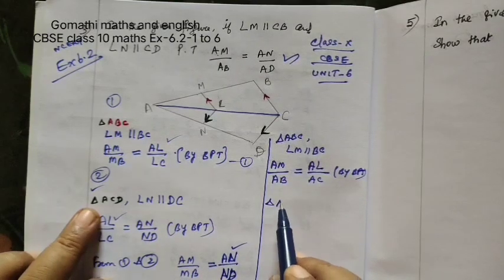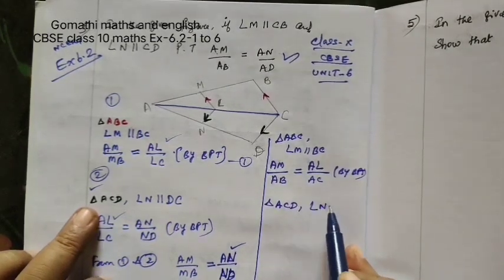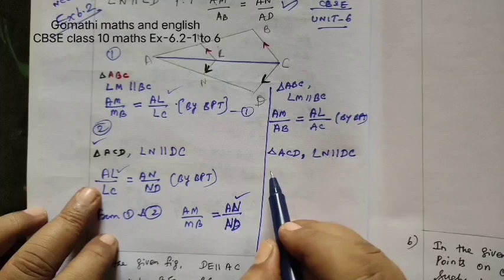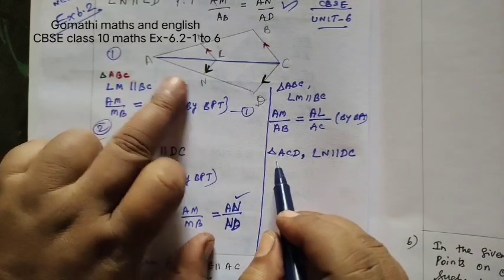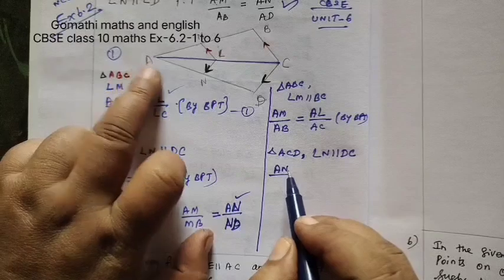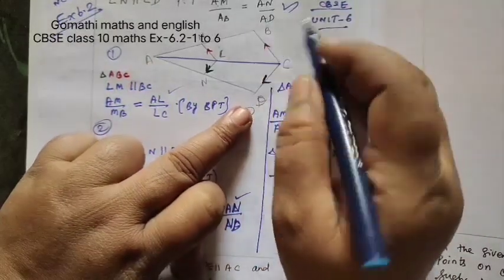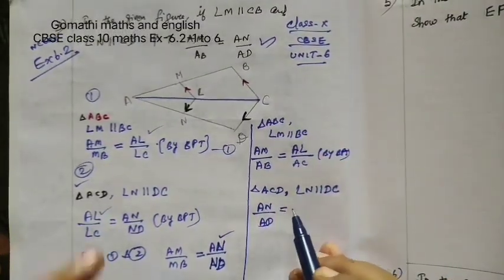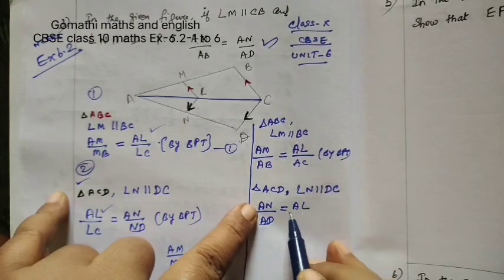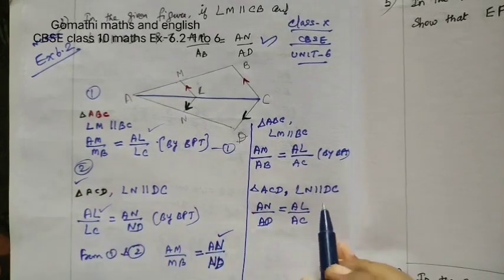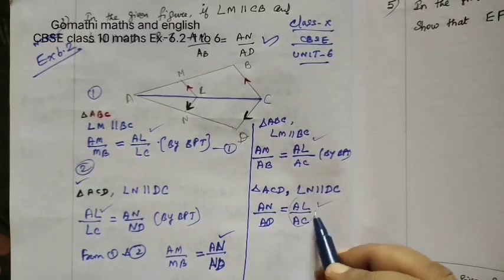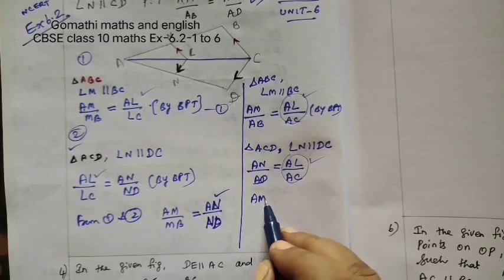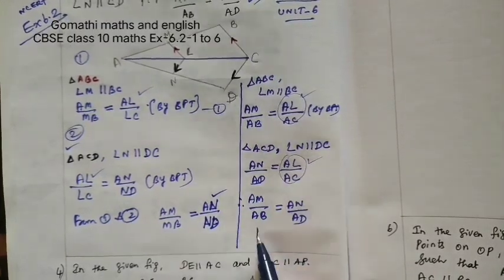Next one is the triangle ACD, LN parallel to DC. According to the question, we choose the ratio equal to AL by AC. So here AL by AC, here also AL by AC. What is the remaining? AM by AB equal to AN by AD. Therefore, hence the proof.